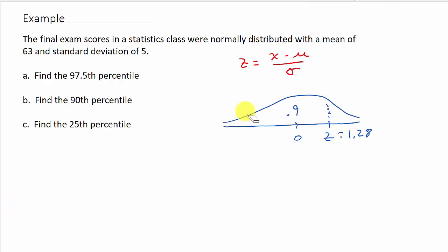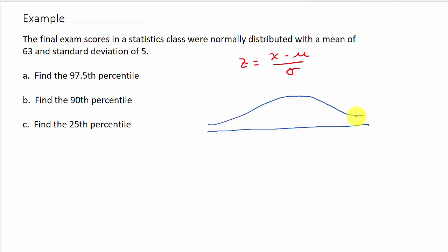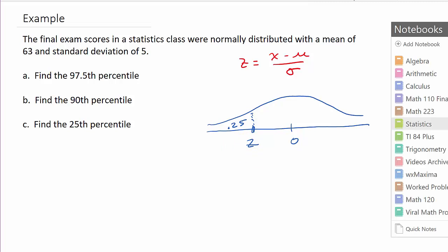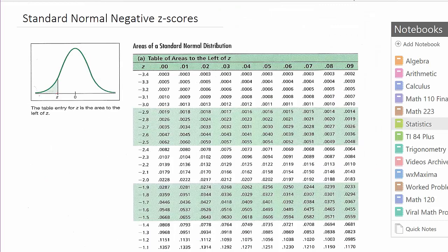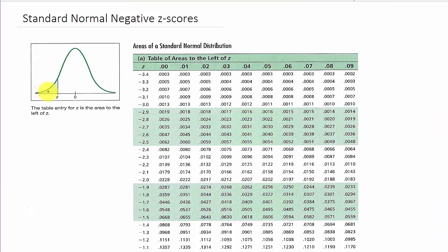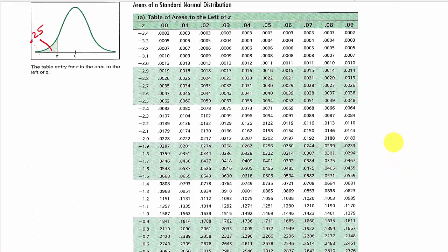Now let's look at the 25th percentile. Drawing the standard normal curve, the mean is 0, and the area to the left of 0 is 0.5. Since I'm looking for the 25th percentile, the z score must be to the left of 0 — it's negative. I'm looking for an area of 0.25 in the negative z portion of the table.